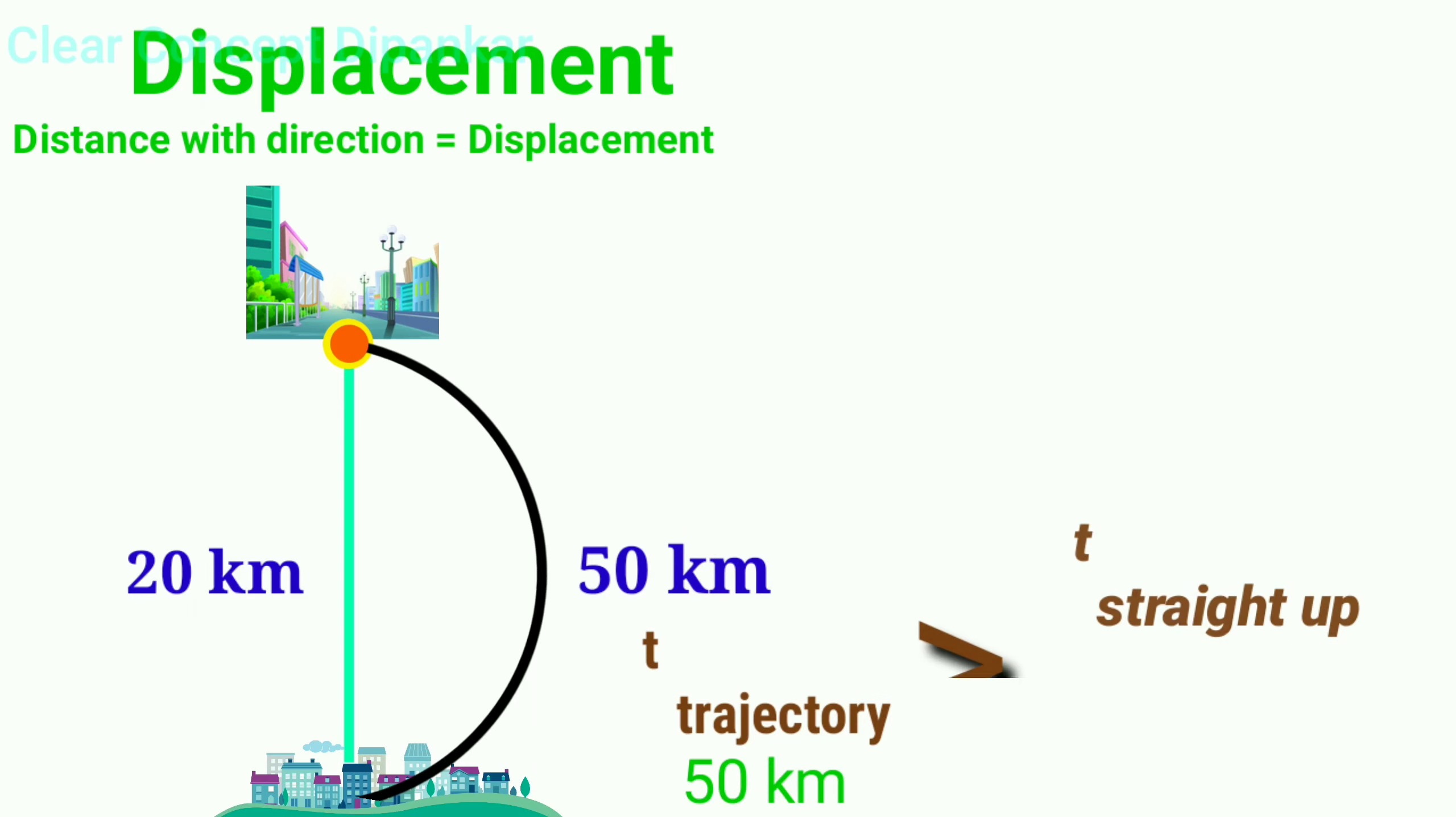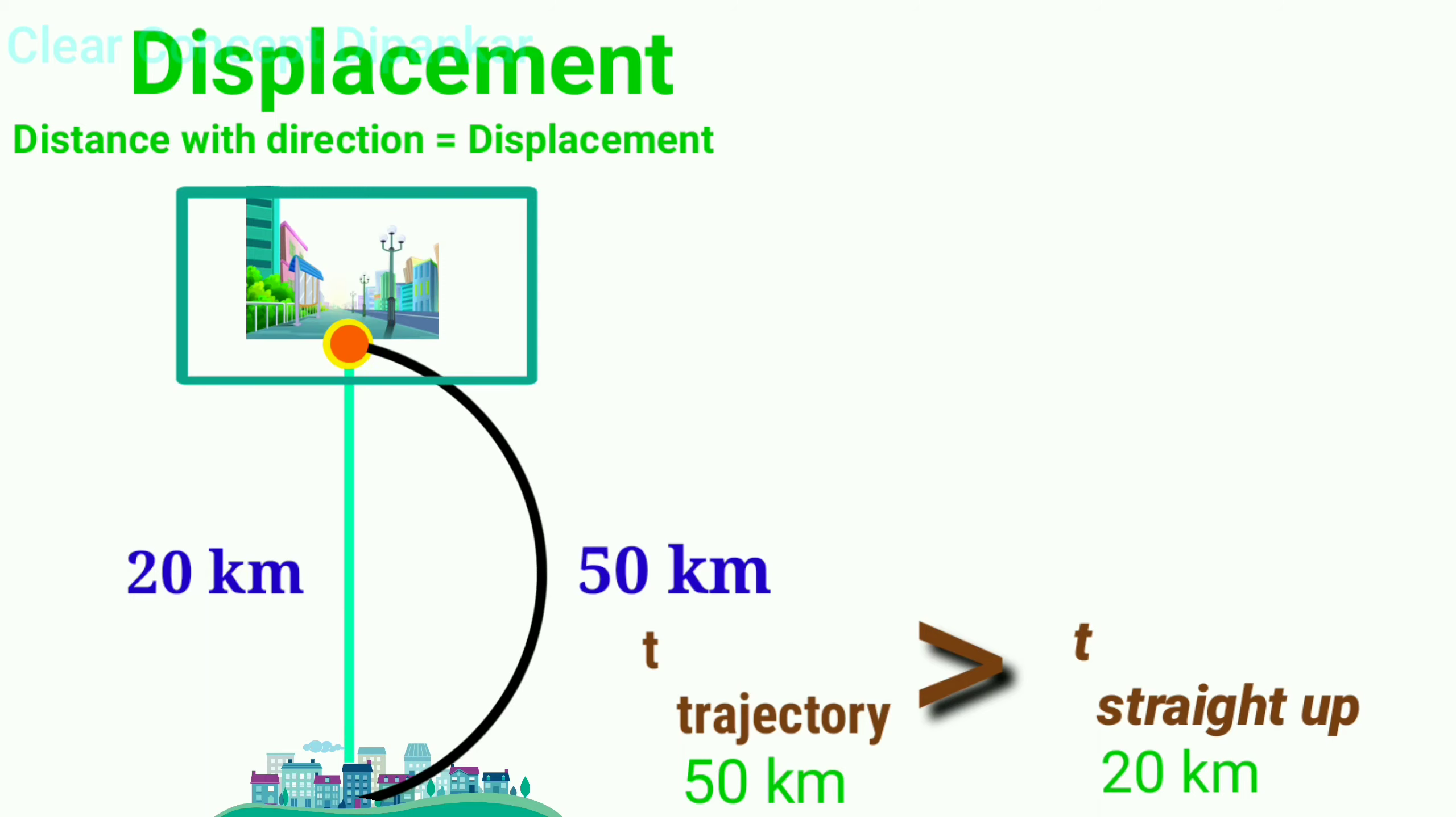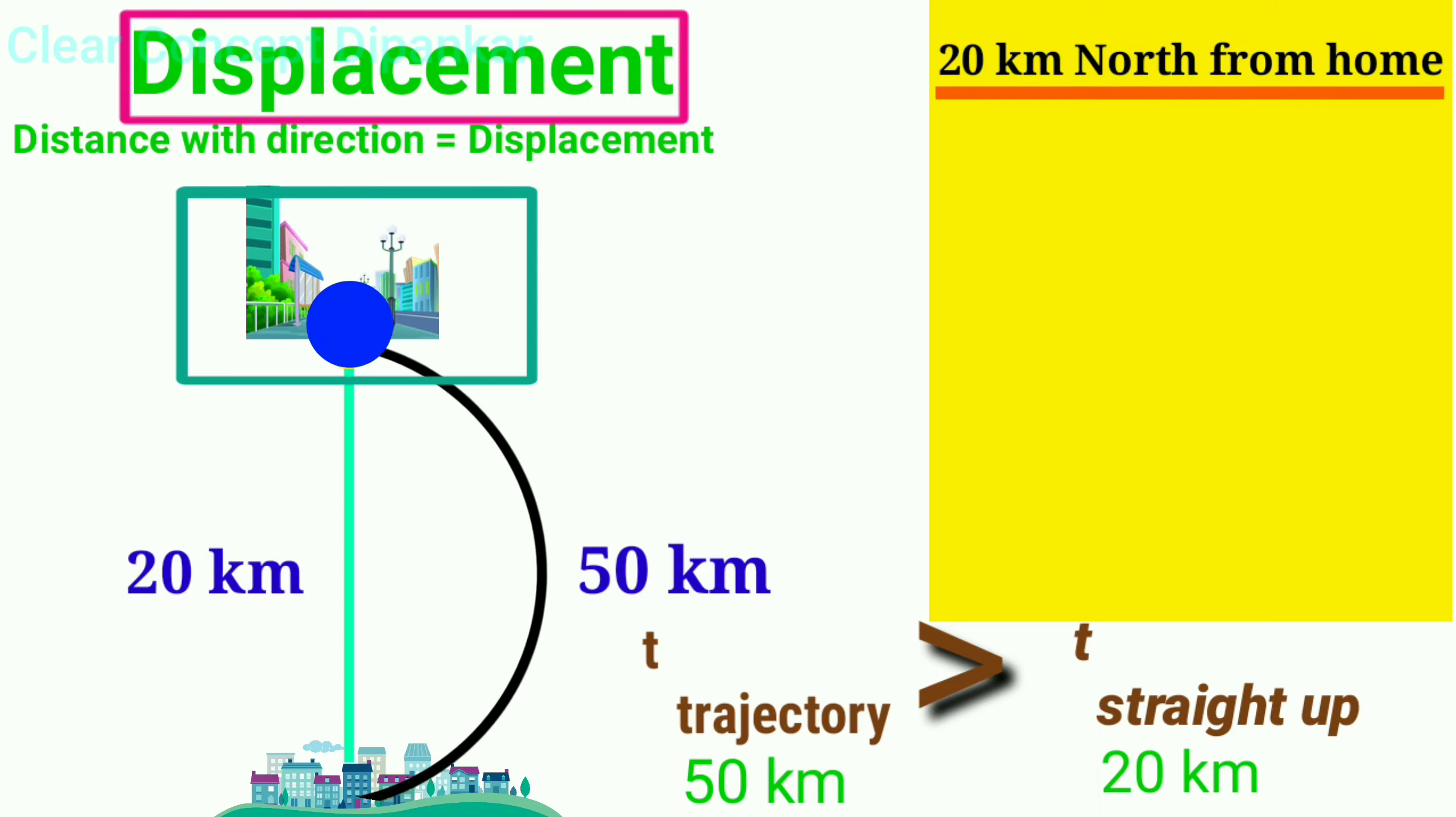The time you took for the trajectory way was greater than the time you could go straight across. But if you call someone to tell them where you were, in both cases, your location is this town, which is 20 kilometers towards north of your home. The displacement in both cases is the same. You traveled 20 kilometers towards north.